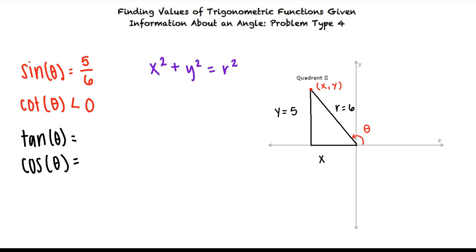We can substitute our values into the equation and solve for x. So the answer is both positive and negative? Not quite. Since we're working in quadrant 2 the adjacent side lies on the negative portion of the x-axis. So our value is x equals negative square root 11.